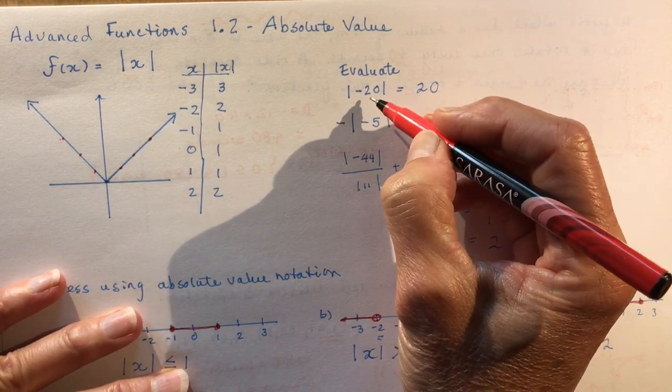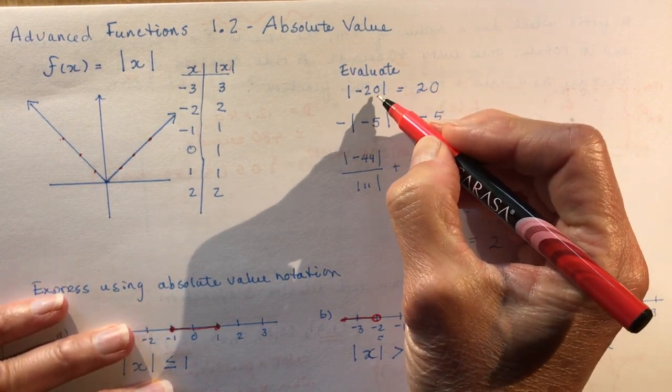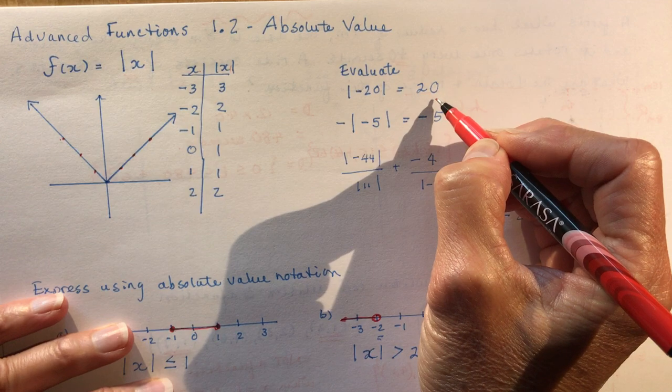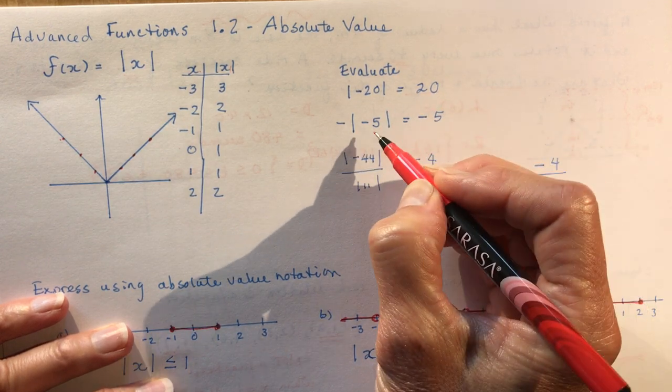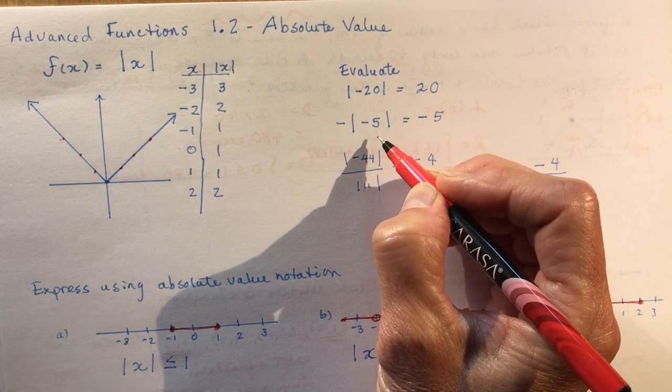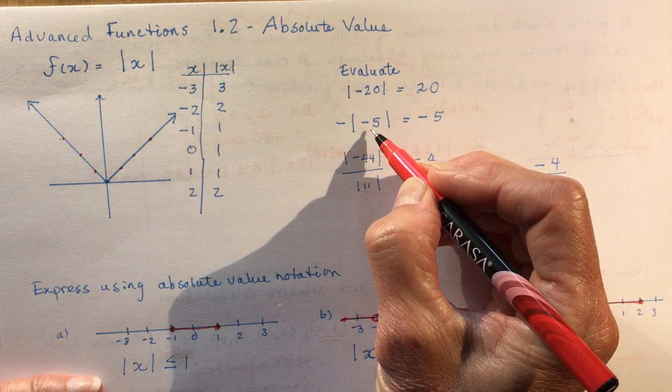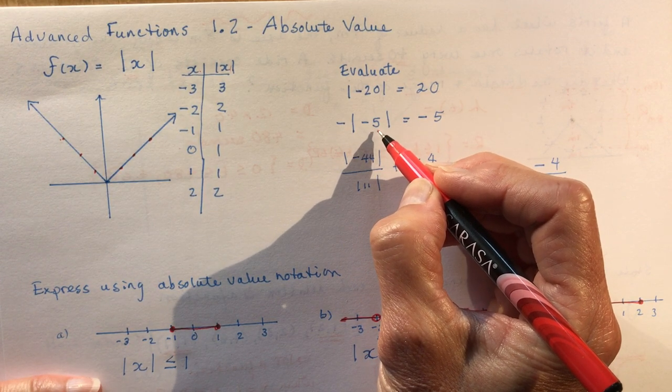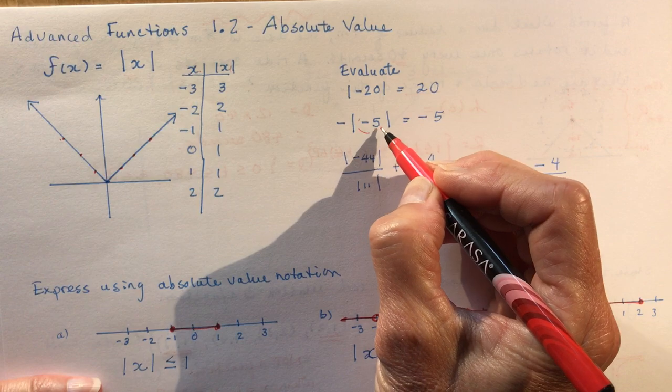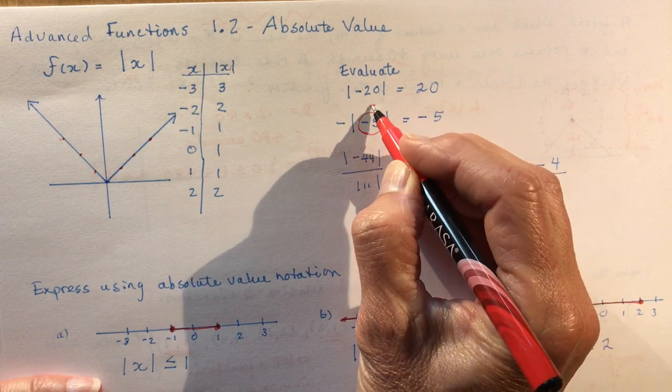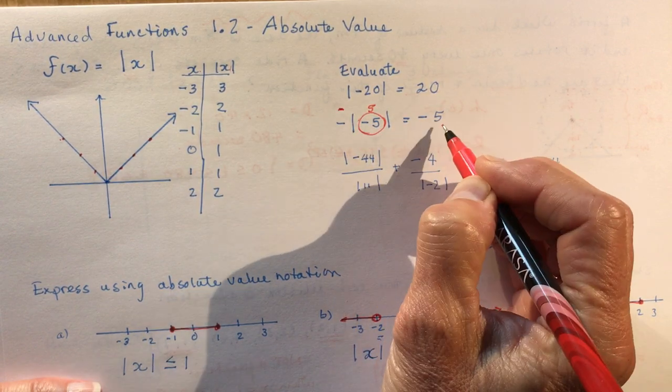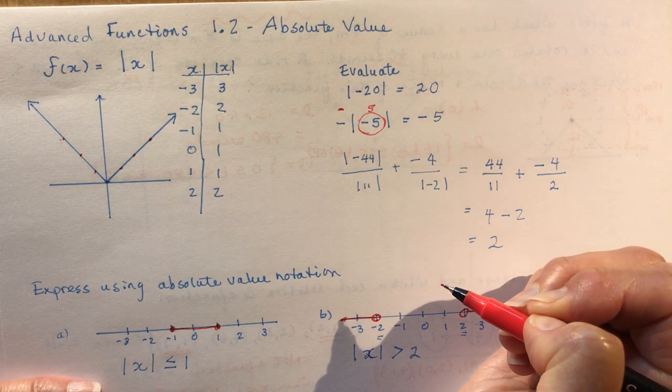When you evaluate the absolute value of a negative number, it's just the positive value. This one is a little trickier where you have the negative of the absolute value of minus five. The absolute value of minus five is five, and then I have the negative outside, so that's why we have negative five.